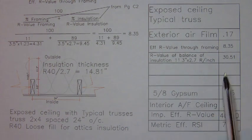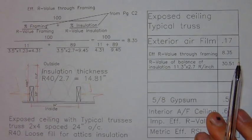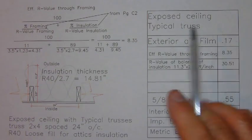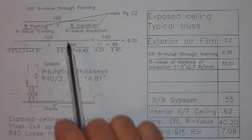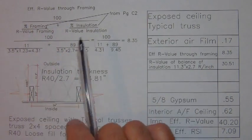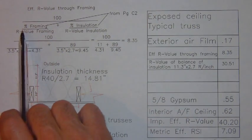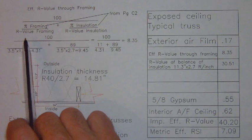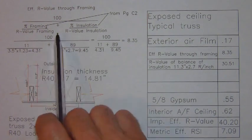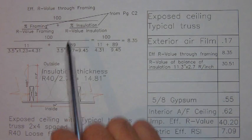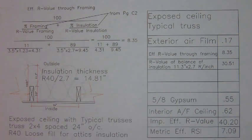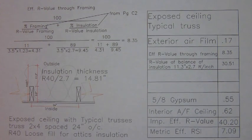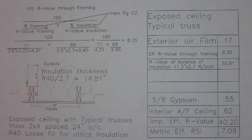So we use a special formula to establish the effective R-value, and we've got this formula up here. 100, all divided by the percent framing divided by the R-value of the framing, plus the percent insulation divided by the R-value of the insulation. And if you were to look on page C5 of your HRAI manual, you should find a table that looks like this.